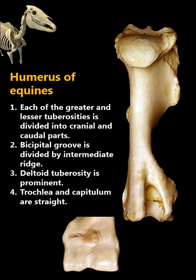As you see, in the horse, each of the greater and lesser tuberosities is divided into cranial and caudal parts. The bicipital groove is divided by an intermediate ridge, the deltoid tuberosity is prominent, and the trochlea and capitulum are straight.